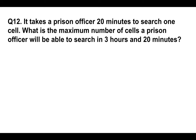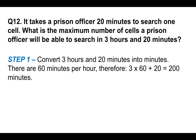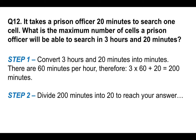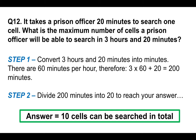Question twelve: it takes a prison officer 20 minutes to search one cell. What is the maximum number of cells a prison officer will be able to search in three hours and twenty minutes? Step one: convert three hours and 20 minutes into minutes — 3 × 60 plus 20 equals 200 minutes. Step two: divide 200 by 20 to get the answer — 10 cells can be searched in total.